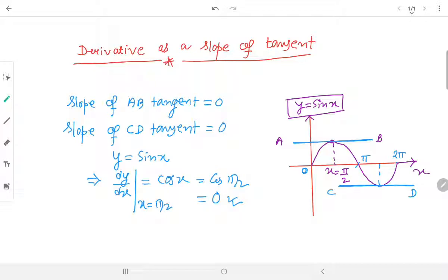Okay. That means I am talking about this point. And slope of AB tangent is also 0. Therefore, we can say that slope of tangent is equals to the derivative.